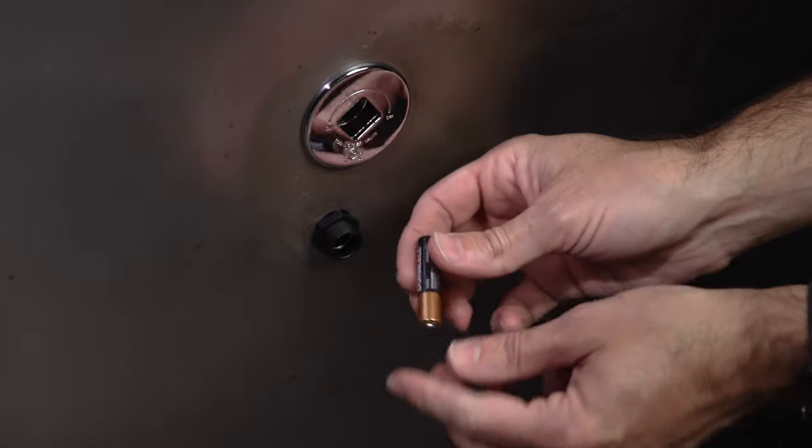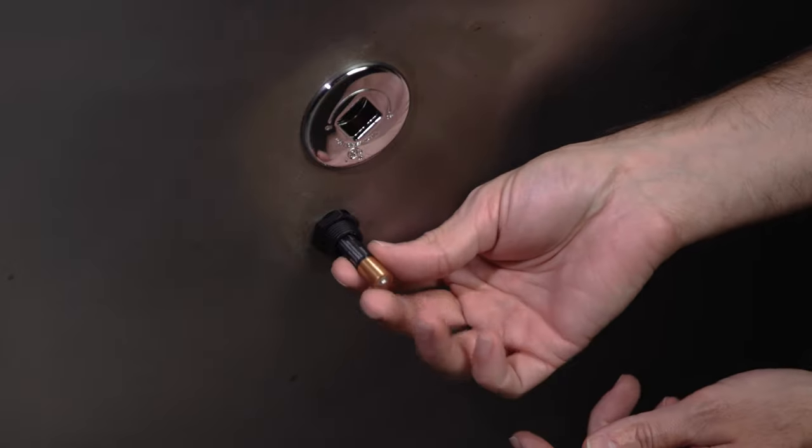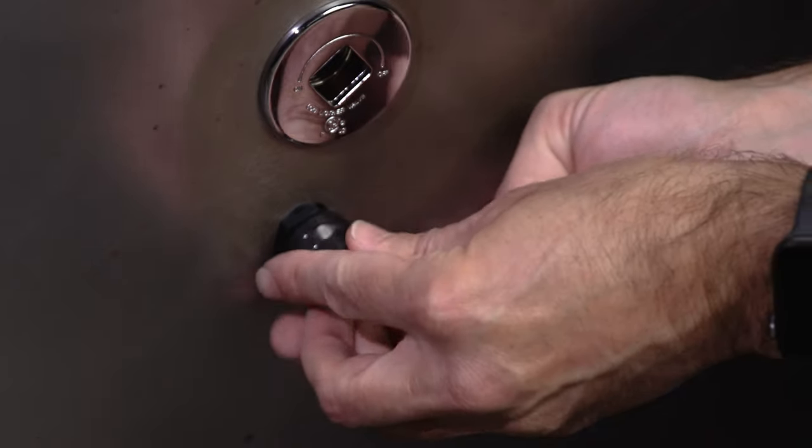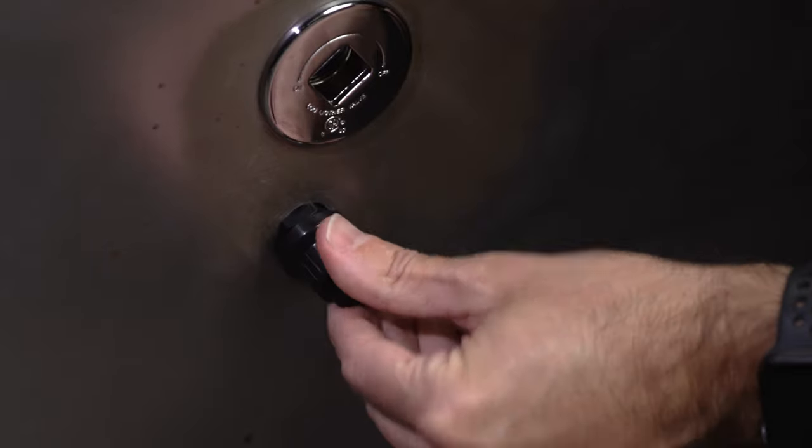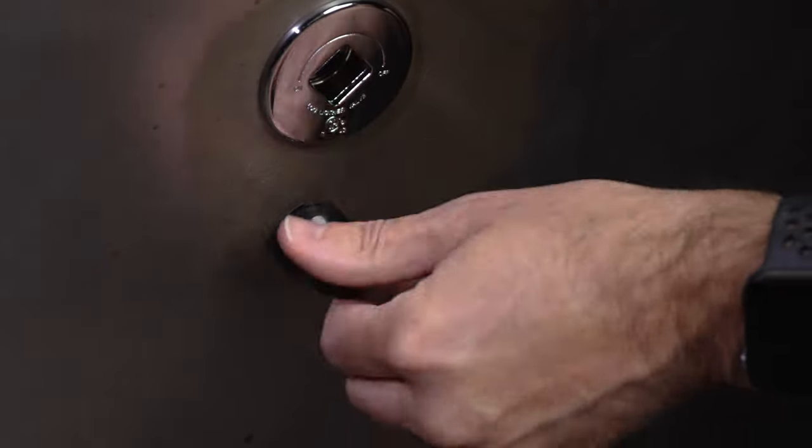Insert a triple-A battery with the positive side toward the button spring. Make sure the spring seats on the battery properly and hand tighten the push button. This should thread on easily, so if it's difficult, make sure you're not cross-threading the cap.